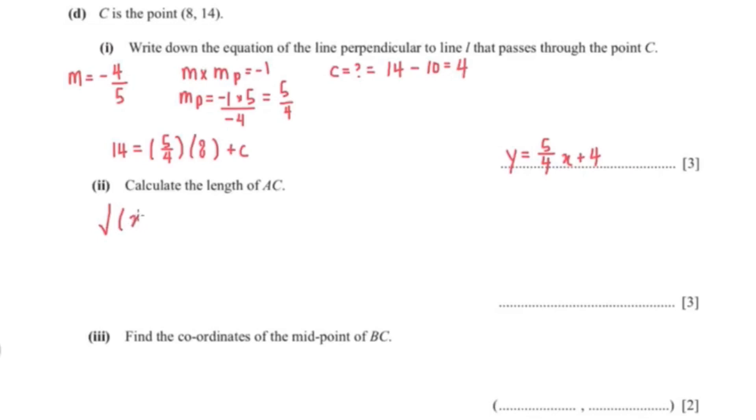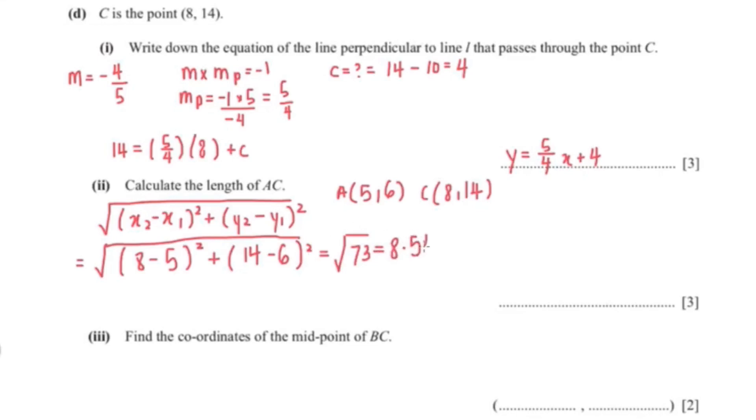So the formula for calculating the length of a line is square root of x2 minus x1 squared plus y2 minus y1 squared. So our A coordinates are 5 and 6 and our C coordinates are 8 and 14. So now we'll just substitute this into the formula to find the length of AC. If you notice, the formula for calculating the length of a line is exactly the same as the Pythagorean theorem. So the length of AC is 8.54. So our answer is 8.54.